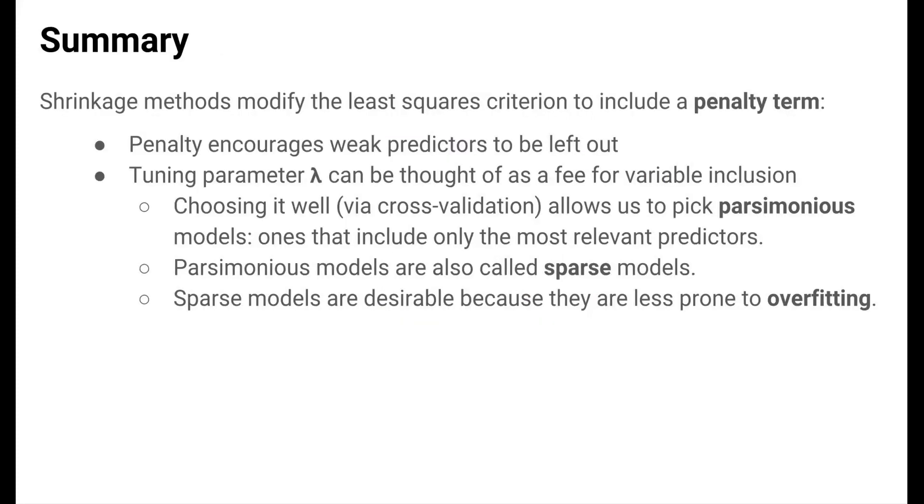So in summary, shrinkage methods try to select models in a very different way than subset selection methods like best subset and stepwise methods. Shrinkage methods use a penalized version of the least squares criterion that mathematically encourages weak predictors to be left out of the model. The lambda tuning parameter that is part of the penalty term can be thought of as a fee incurred for variable inclusion. Choosing it well, usually via cross-validation, allows us to pick parsimonious models, that is models that only include the most relevant predictors. Parsimonious models are also called sparse models. We want sparse models because they are less prone to overfitting.